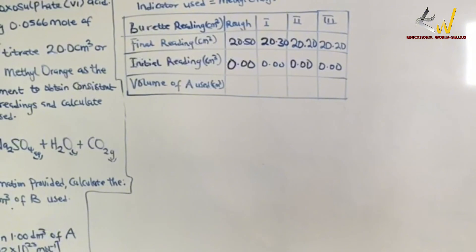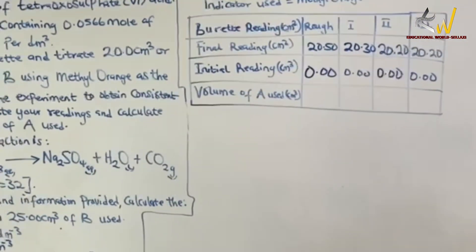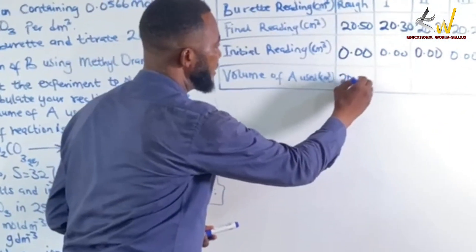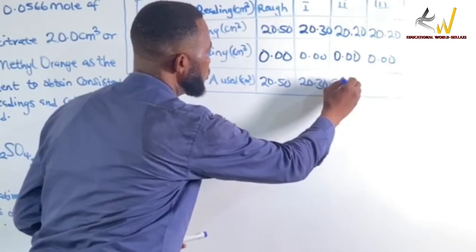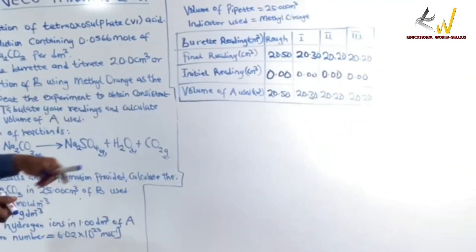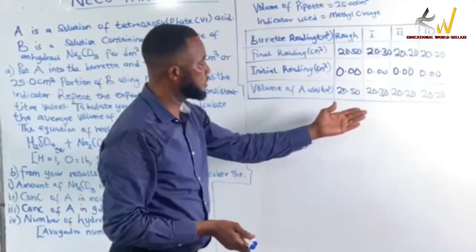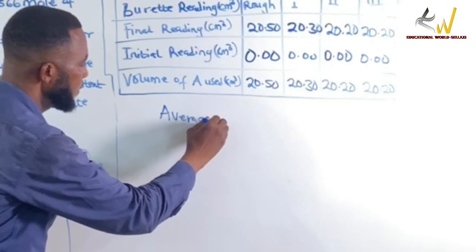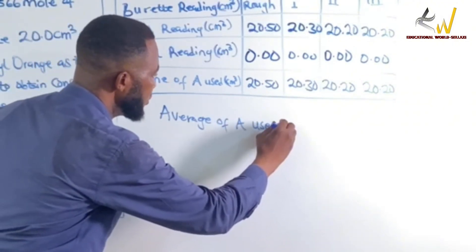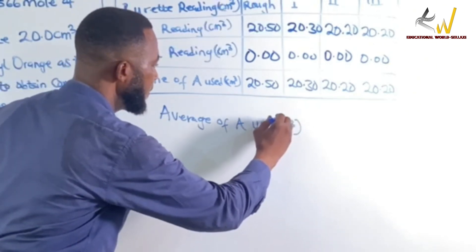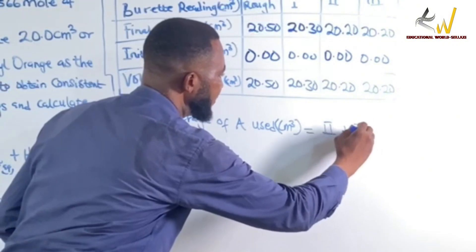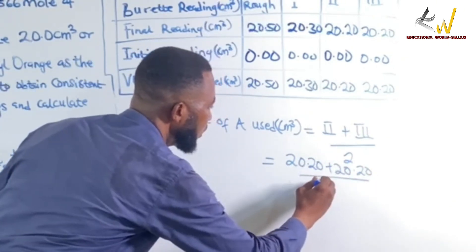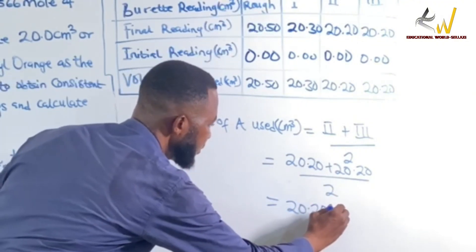I believe this result has come out correctly. We have now completed our readings. The next stage is finding the average volume. The volume of A used is: for the first concordant reading 20.20 cm³ and the second 20.20 cm³. The average titre is (20.20 + 20.20)/2 = 20.20 cm³. They ask us to calculate the amount in moles.